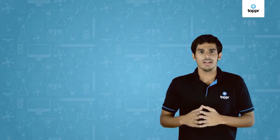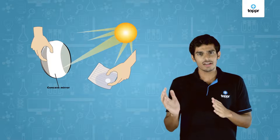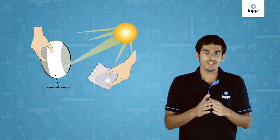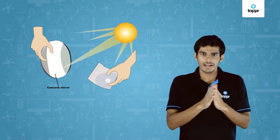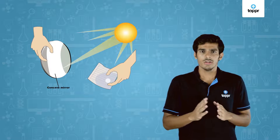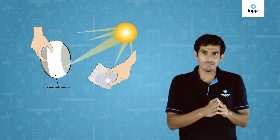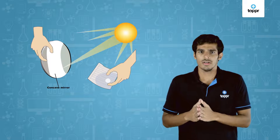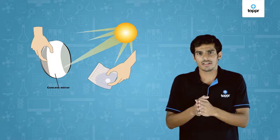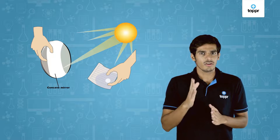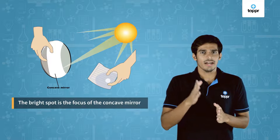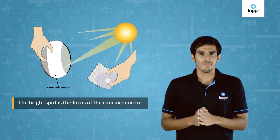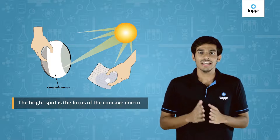Now let us perform an activity. Hold a concave mirror in your hand and point its reflecting surface towards the sun. Direct the reflected light towards a sheet of paper, and move the paper back and forth until you receive a bright spot on the paper. Hold the paper and mirror in the same position for a few minutes. Initially the paper starts to produce burning smoke, and if you keep it a little longer, it may even catch fire. The concave mirror converges the light from the sun, and the bright spot on the paper is basically the image of the sun. This point is the focus of the concave mirror, and the heat generated due to the concentration of sunlight ignites the paper.